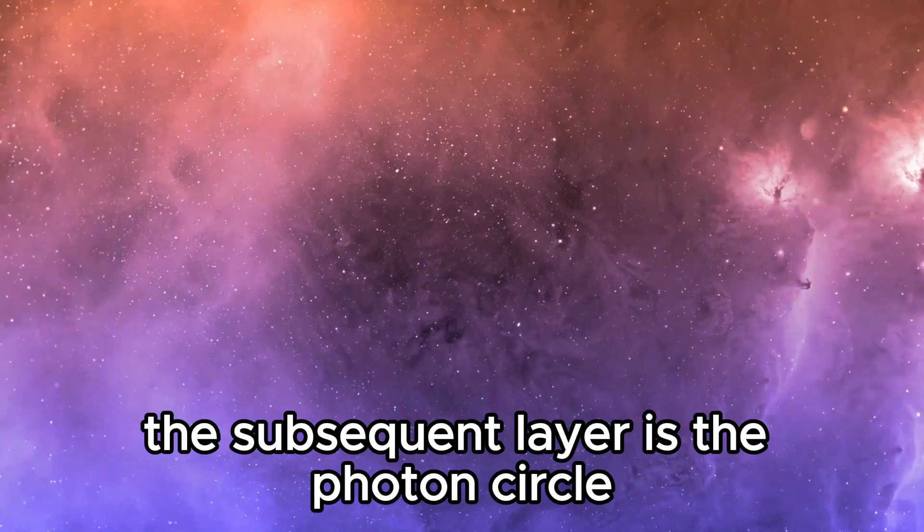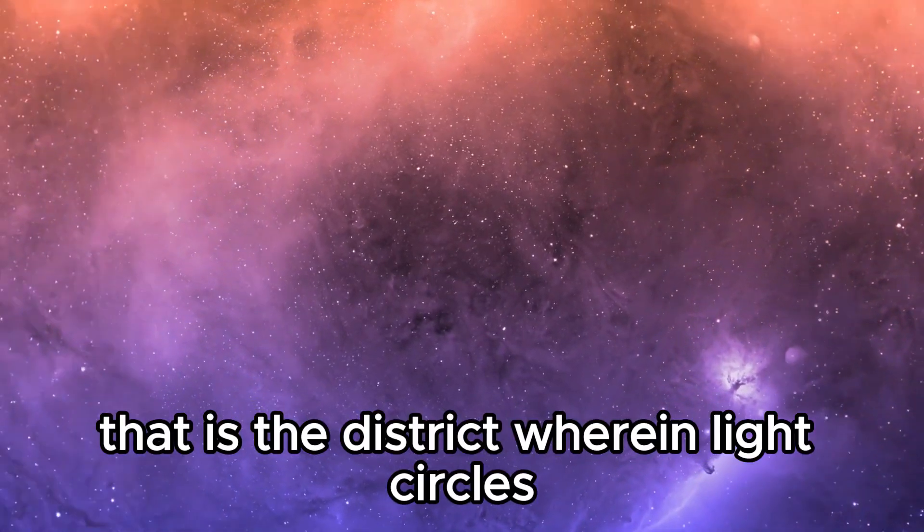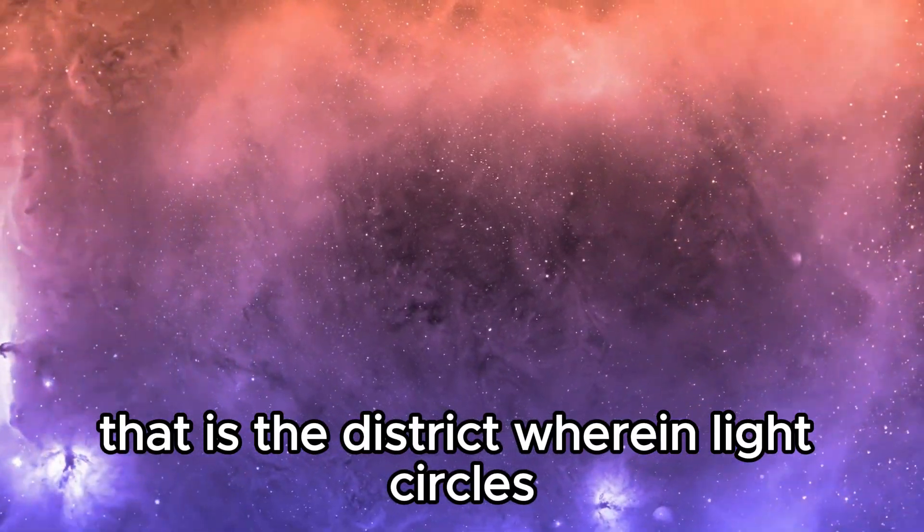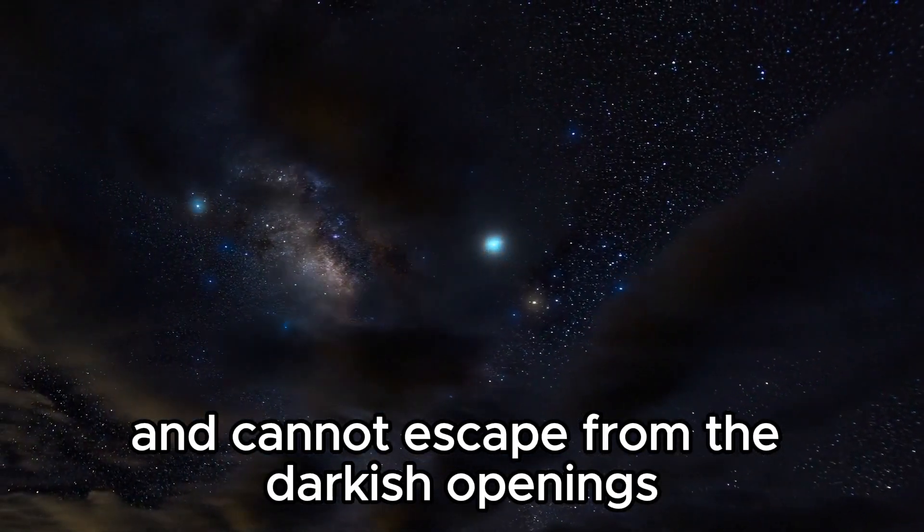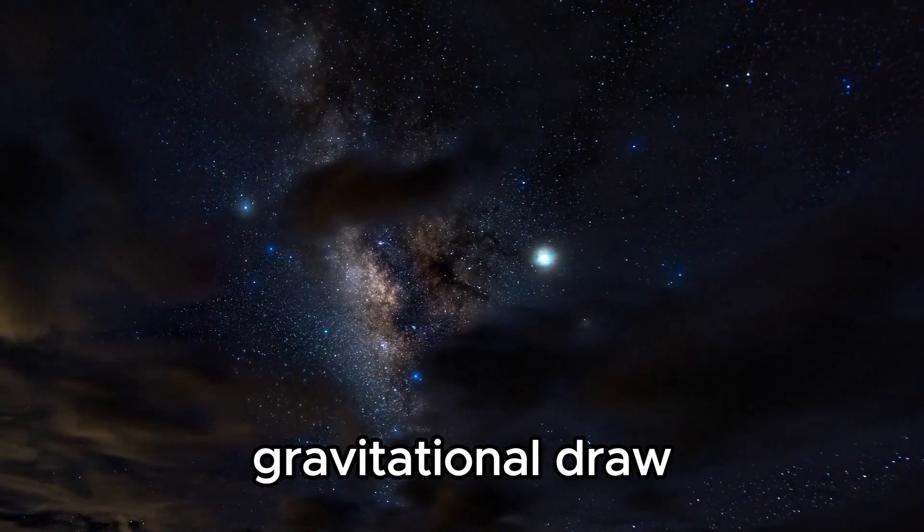The second layer is the photon sphere. This is the region where light circles the dark opening. Any light that enters this region will be trapped and cannot escape from the dark opening's gravitational pull.